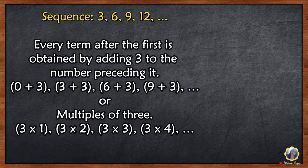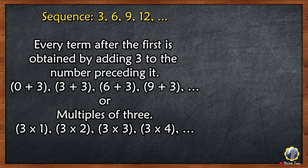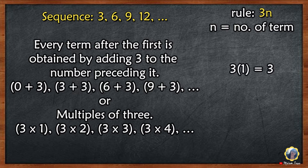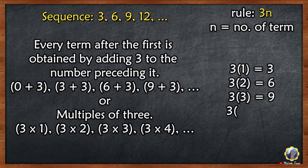Or multiples of 3: 3 times 1 is 3, 3 times 2 is 6, 3 times 3 is 9, 3 times 4 is 12. So the rule for the sequence 3, 6, 9, 12 is 3 times n, or 3n. N is the number of terms.